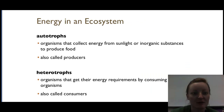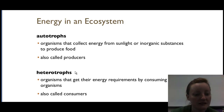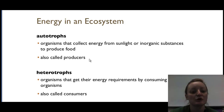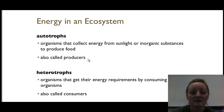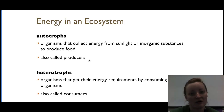Energy in an ecosystem — a quick review. Autotrophs make their own energy. Heterotrophs use energy from other organisms. Autotrophs are also known as producers because they produce their own food, whereas heterotrophs are also known as consumers because they have to consume their food.